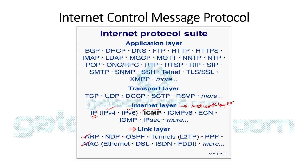We also have the ICMP protocol, and there are two versions: ICMP, which works with IPv4, and ICMPv6, which works with IPv6. Alongside these we have IGMP, IPsec, ECN, and more. In the transport layer we have TCP, UDP, DCCP, SCTP, RSVP, and so on. In the application layer there are many more protocols as well.